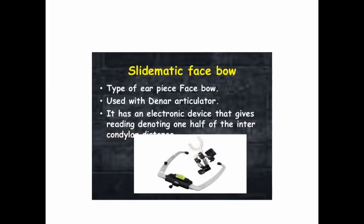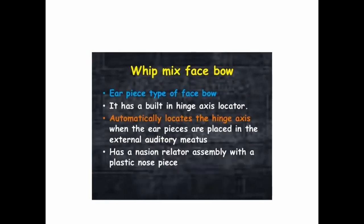Another type is the Slidematic facebow, used with the Denar articulator. It has an electronic device that gives a reading denoting one half of the intercondylar distance, so the intercondylar distance can be measured by means of the Slidematic facebow.